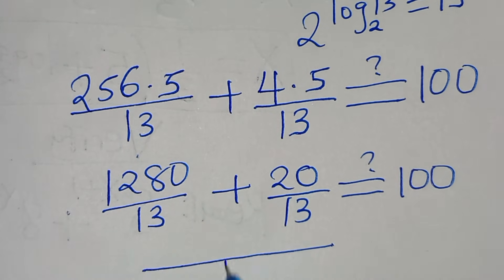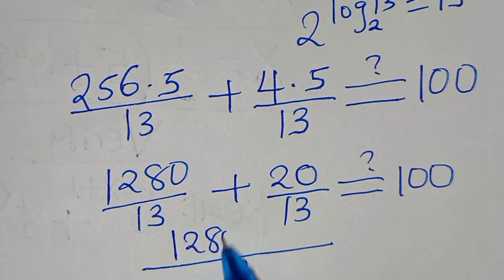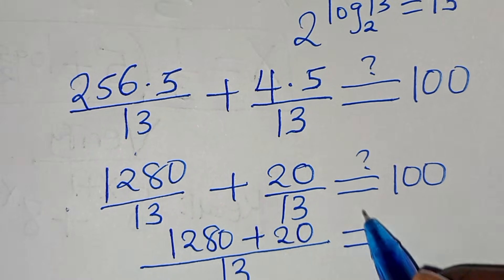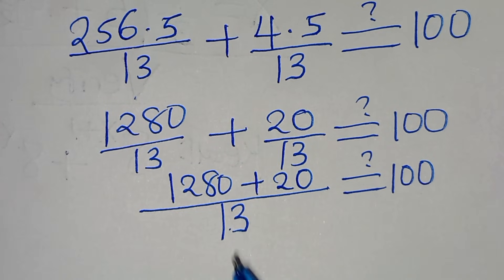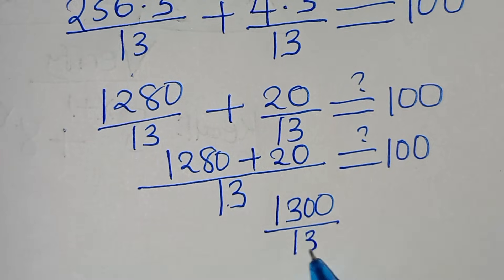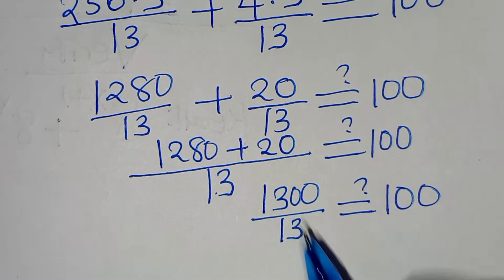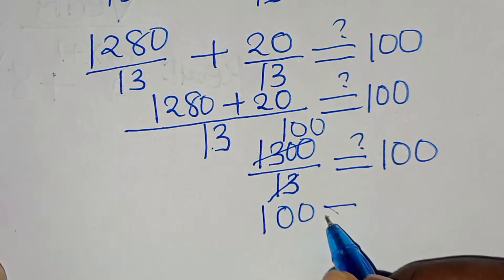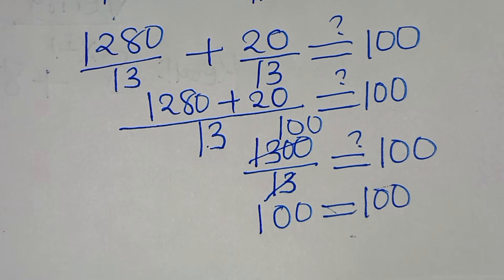The LCM is 13: 1280/13 + 20/13 = (1280 + 20)/13 = 1300/13 = 100. So the left-hand side equals 100, which equals the right-hand side.